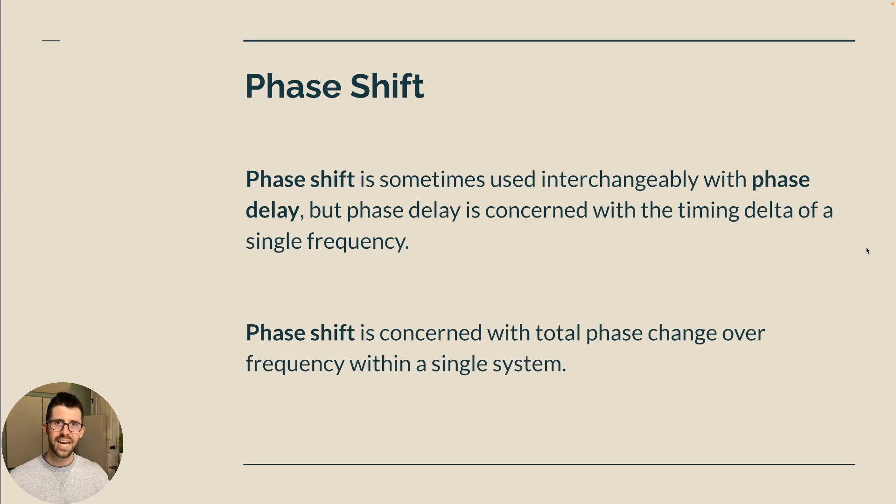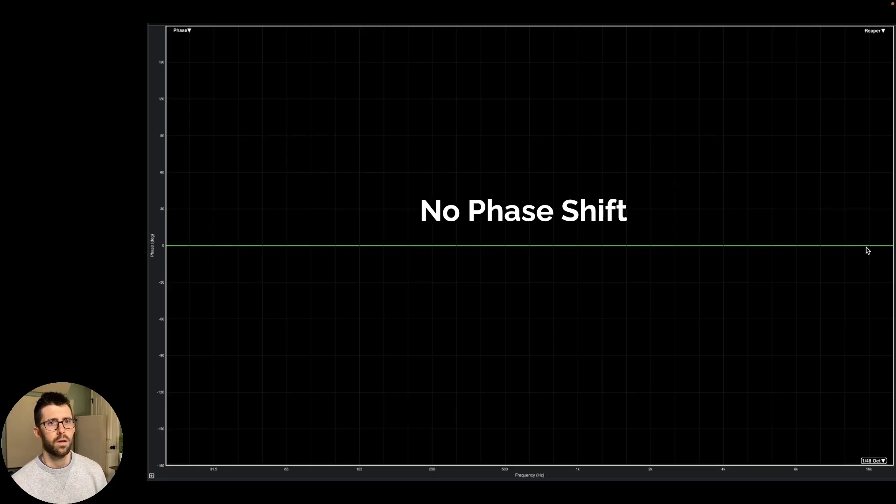So this is talking about the entire broadband change, you're looking at the phase slope over what's happening. So if we're looking at this graph here, we now have no phase shift. So this is a transfer function, it's showing us what's happening between the input and output, comparing our measurement and our reference. So this measurement is saying there's no change in phase. And how can we see that?